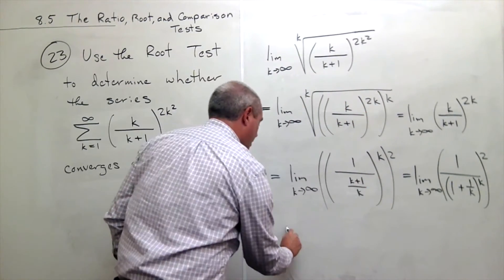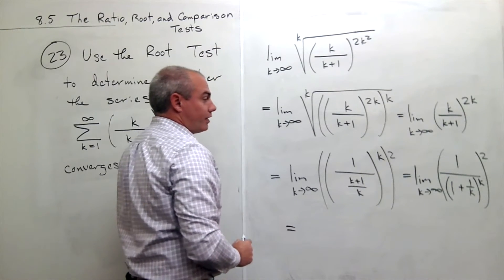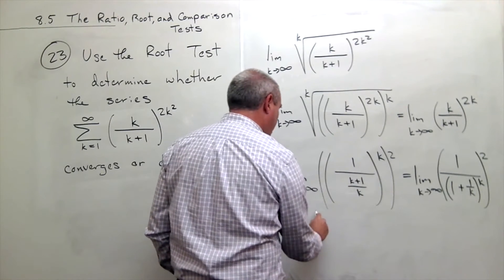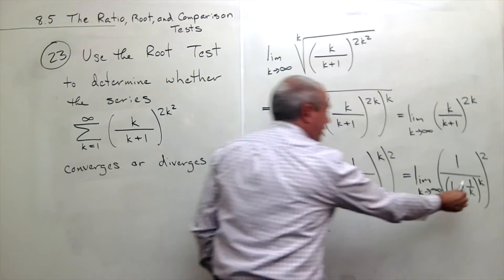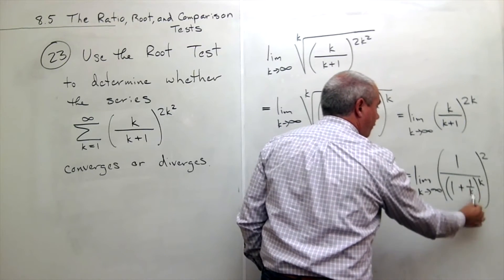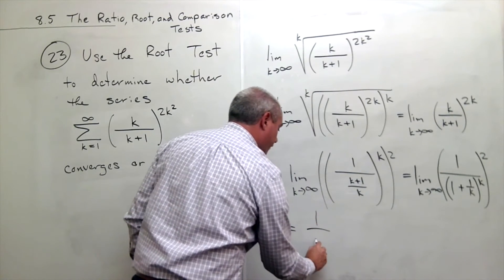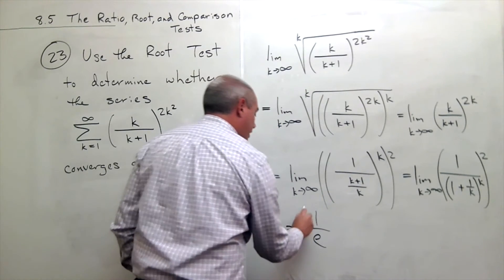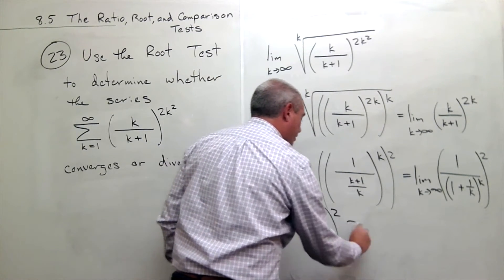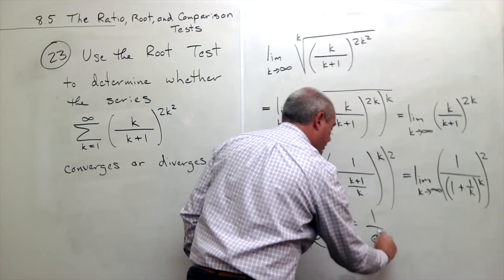So let's replace, and I get the following. That this limit is 1 over this bottom, 1 plus 1 over k to the k, the limit as k goes to infinity. That's e to the first power, or just e. And then I have that quantity squared, which is 1 over e squared. Now,